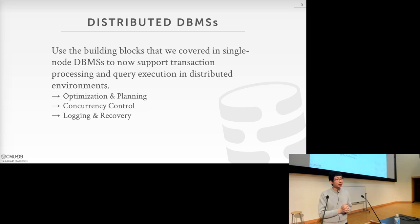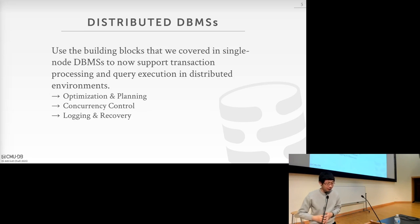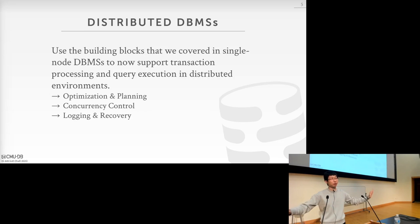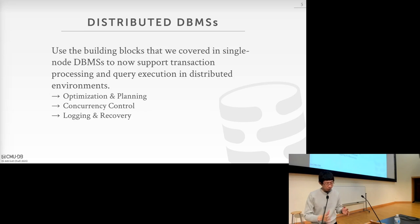All the topics we've discussed so far in this class — we will still use them in a distributed database setting. For example, we will still do query optimization and planning, concurrency control, and log and recovery. But most of those things will actually become harder. For concurrency control, you not only need to handle data on different machines that are potentially far away with high communication cost, but also while transactions are executing, if you lock some data and that node goes down, your lock would never be released if you don't have a mechanism to handle that.